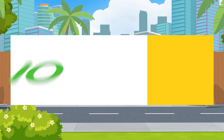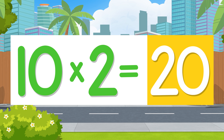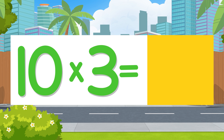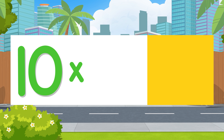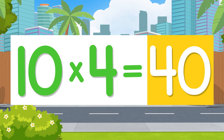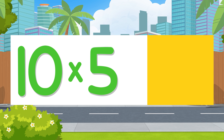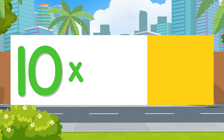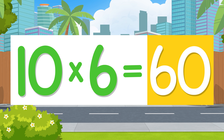Ten times one is ten. Ten times two is twenty. Ten times three is thirty. Ten times four is forty. Ten times five is fifty. Ten times six is sixty.